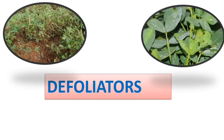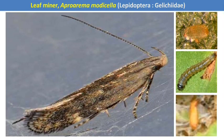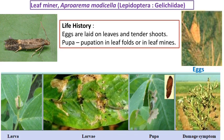The next category of pest is defoliators — pests which infest the leaves and completely defoliate the plant. The first is the leafminer, Aproaerema modicella, a lepidopteran pest. Egg laying takes place on leaves and tender shoots. The caterpillar mines on the surface of leaves with webbing of leaves occurring, feeding in a concealed condition. After larval development, pupation occurs in leaf folds or leaf mines.